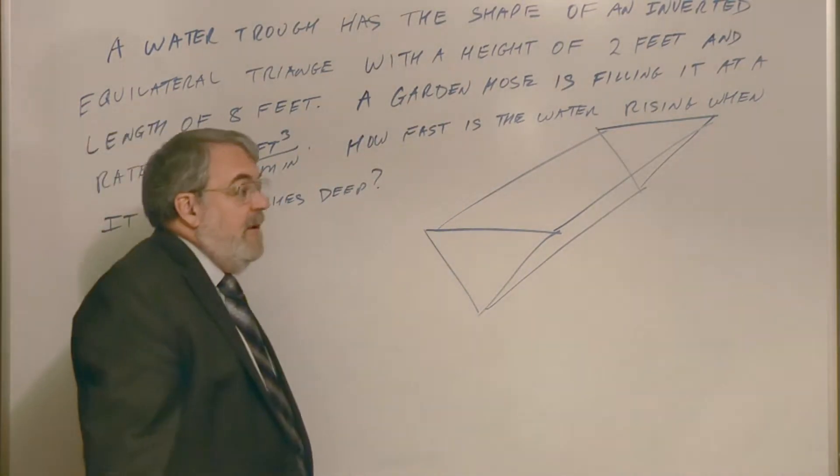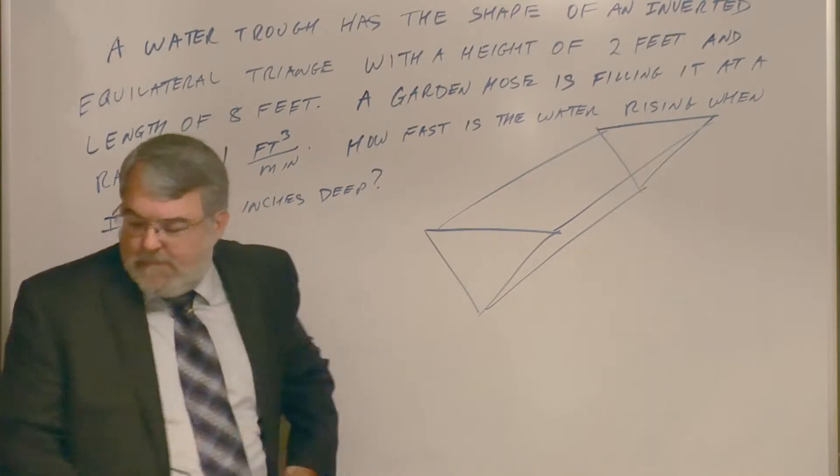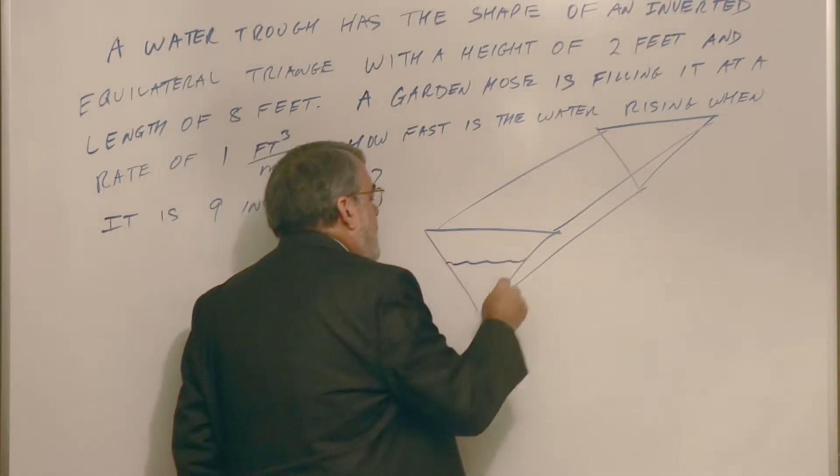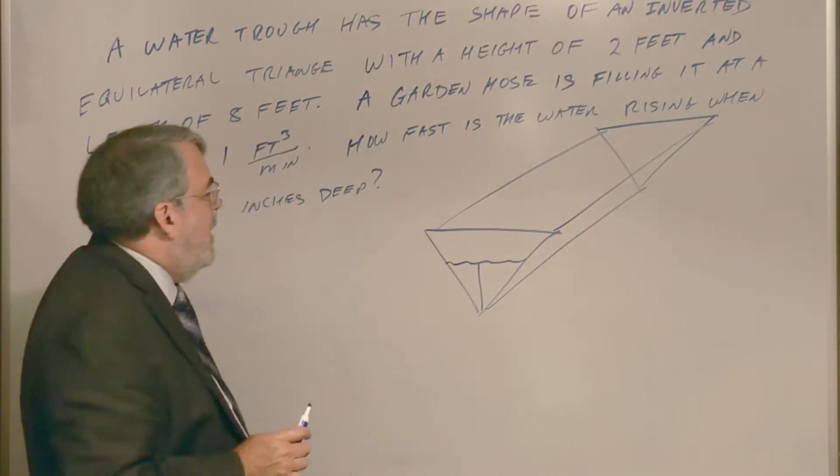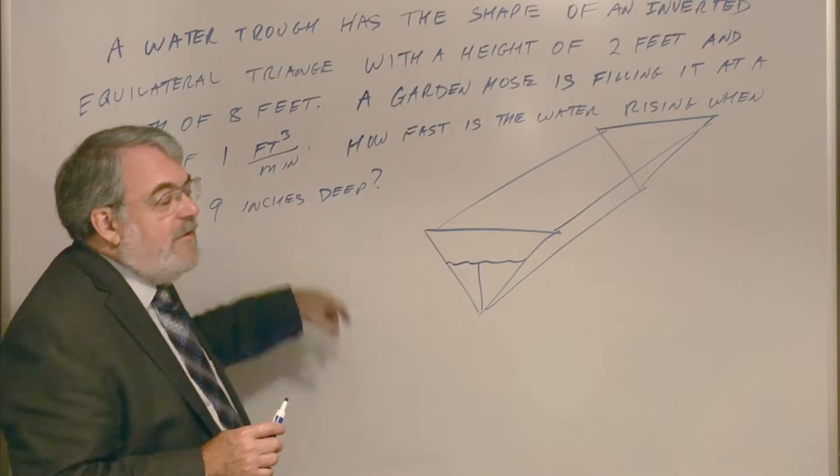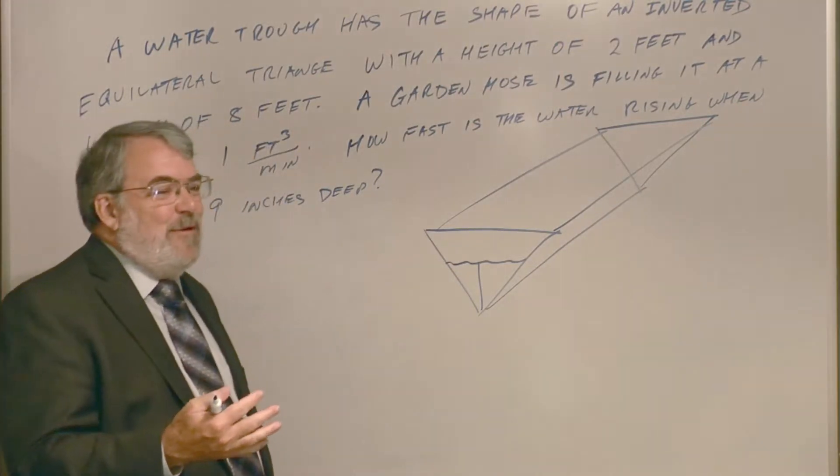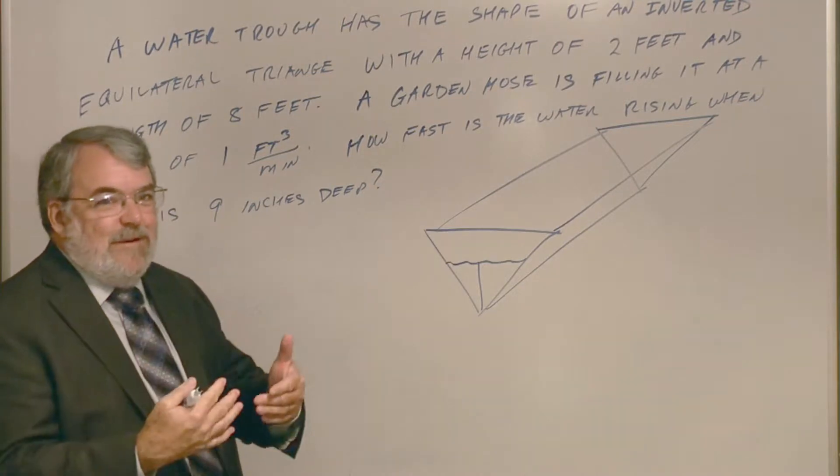The troughs kind of look like this. One end is an equilateral triangle and then it expands out. There's probably another equilateral triangle over here. That's the idea. And the length is eight feet. That's great. The water is, how high?